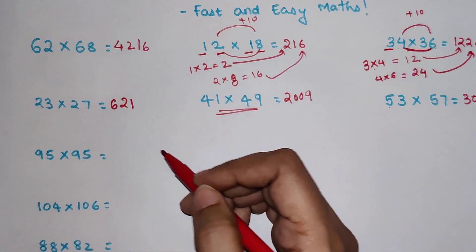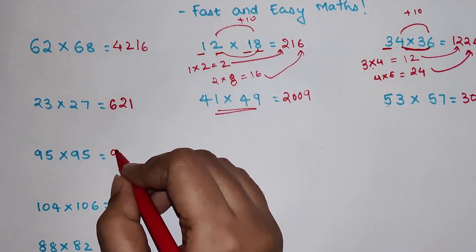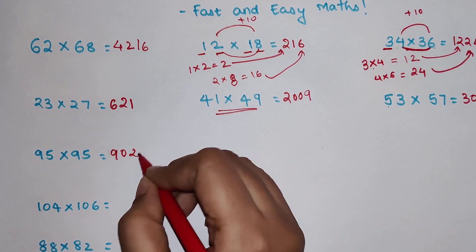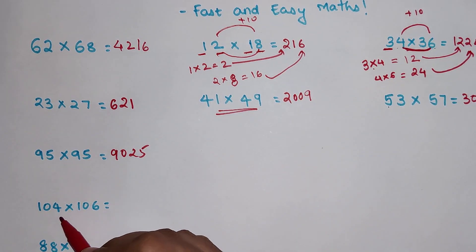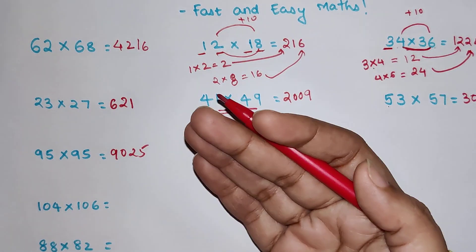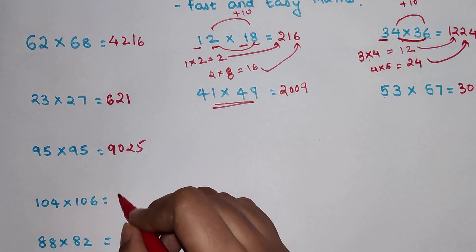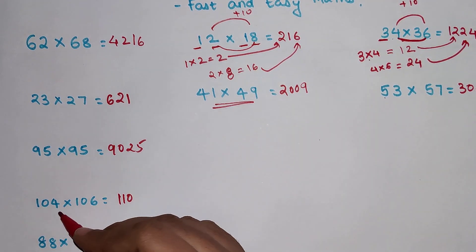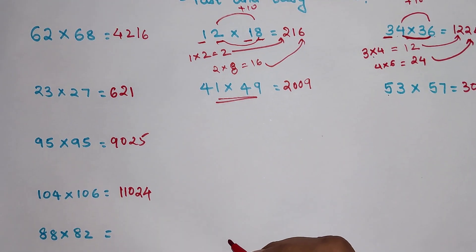Now 95 into 95. So 9 next digit gets multiplied is what? 10. So 90 and 5 into 5 gets you 25. Similarly 104 into 106 we have. So 10 will get multiplied to the number which is coming after 10. That is 11. So 10 into 11 gets you 110. And 4 into 6 gets you 24.